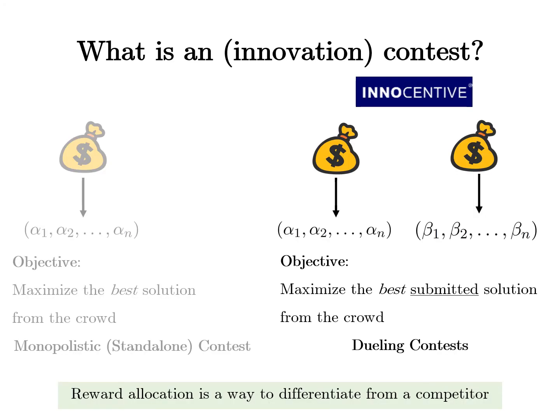Yet crowdsourcing platforms such as InnoCentive display multiple concurrent dueling contests. The difference compared to the old view of contests is that here solvers must first self-select a contest and then determine the right effort to exert. Each of these multiple coexisting contests splits its budget into multiple prizes, and each firm hosting a contest acts out of its own self-interest and cannot control what prizes their competitors offer. So prizes motivate both contest selection and effort.